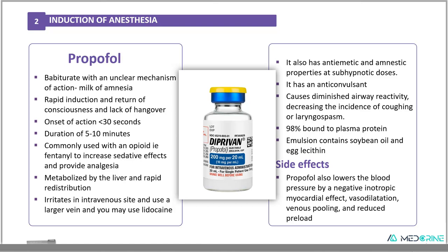Propofol is commonly used with an opioid, for example fentanyl, to increase the chances of sedative effects and provide analgesia. The metabolism of propofol is by the liver and it has a rapid redistribution. Propofol is known to cause pain on intravenous injection, therefore you need to use a larger vein and sometimes use lidocaine. It is also known to have anti-emetic and amnestic properties at sub-hypnotic doses, with anticonvulsant properties too.